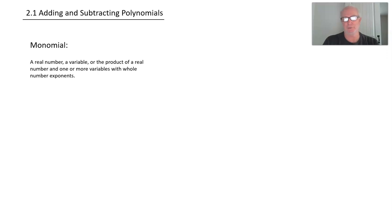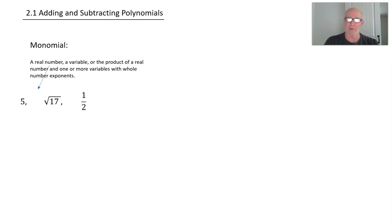All right, let's look at each part. First is a real number. Five is a monomial. Square root of 17 is a monomial. One half is a monomial. A real number by itself is a monomial.